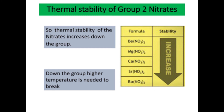The smaller the cation, the higher the polarization in the nitrate ion; the larger the cation, the smaller the polarization. Since magnesium is small, the nitrate ion in magnesium nitrate is polarized and easy to break. But for strontium nitrate, the strontium ion is larger, so the nitrate ion is non-polarized.